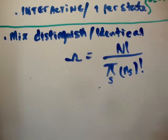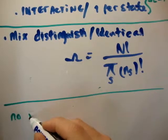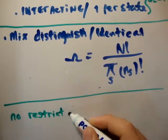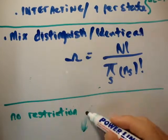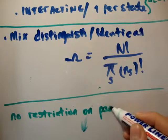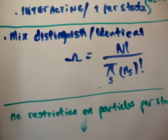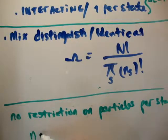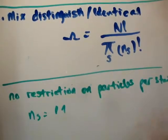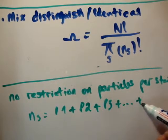And finally, where there is no restriction on, that's supposed to be on, believe it or not, per state. What do we do here where there is no restriction on the number of particles that can go into each state? Well, we had N sub S equal to particle 1 plus particle 2 plus particle 3 plus the whole way up to particle S.